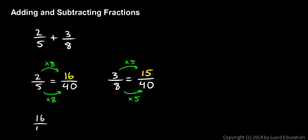I can just write 16 over 40 plus 15 over 40. And now I can combine the numerators. 16 and 15 is 31. So 31 over 40 is my answer.